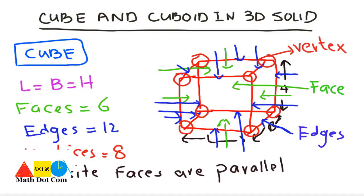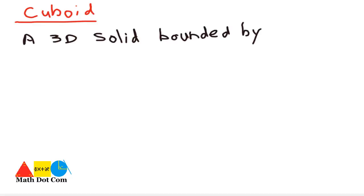Now, besides cube, there is also another one that is a cuboid that we have to discuss in order to differentiate between them. Very important figures in 3-dimensional solids. Cuboid is also a 3-dimensional solid bounded by faces, vertices and edges. Let's see.